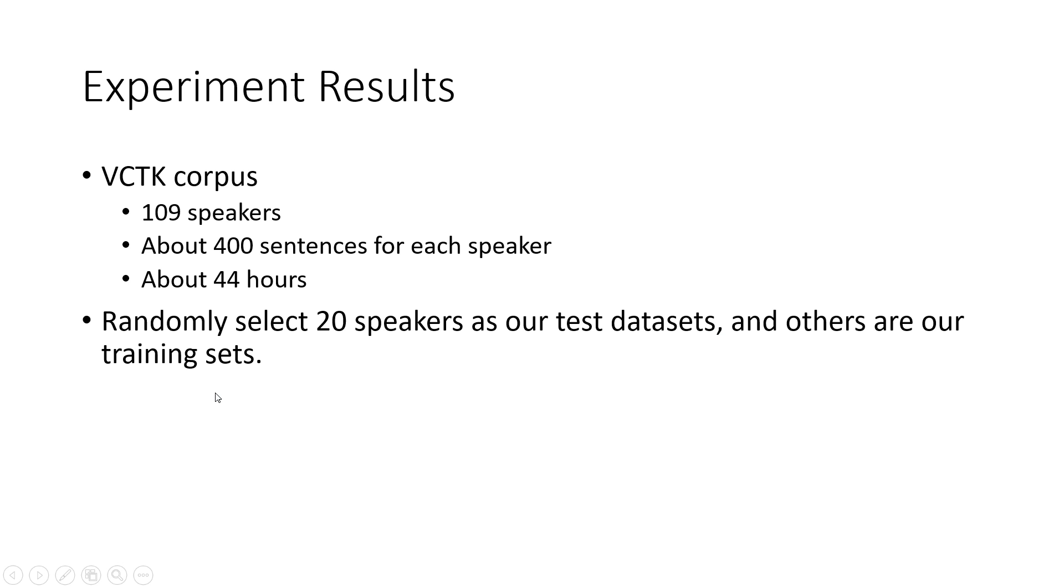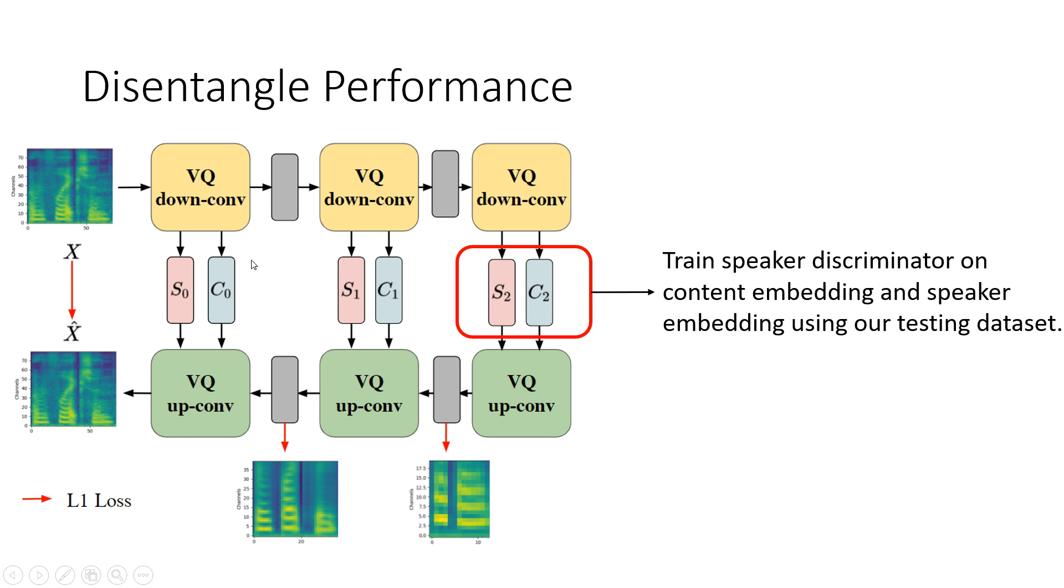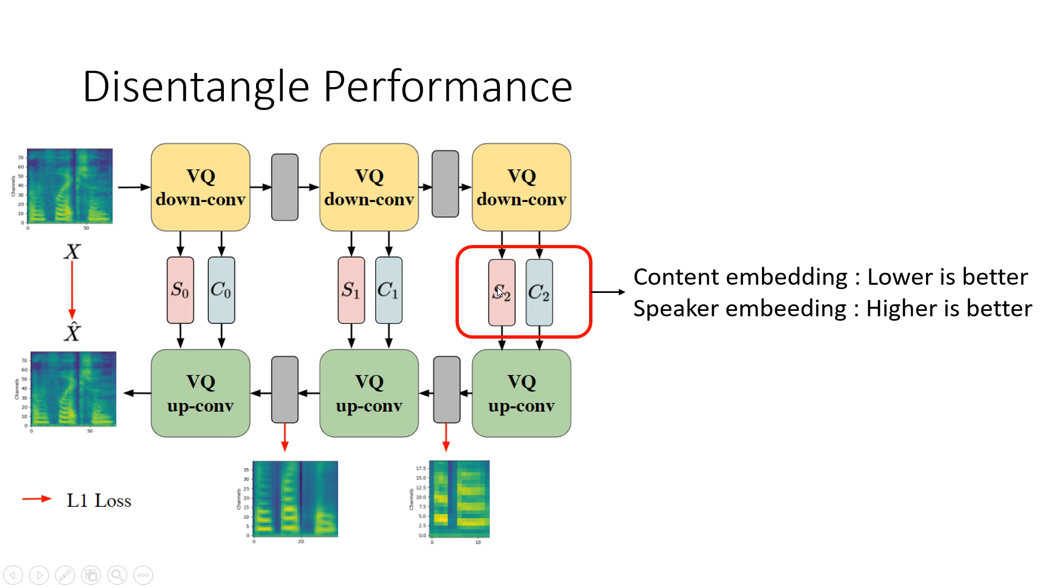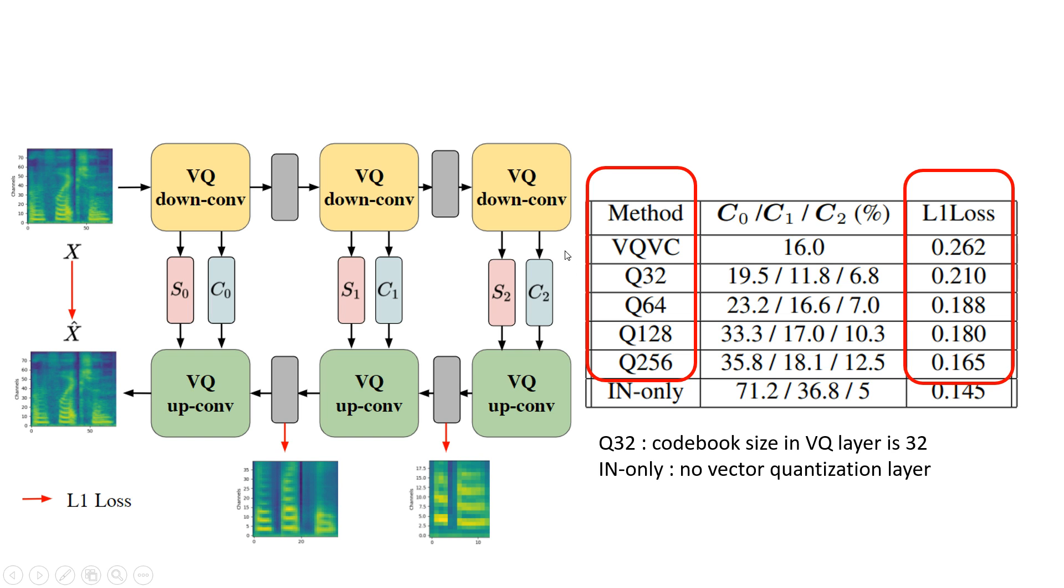The first experiment we want to show is the disentangle performance. We train a speaker discriminator on content embedding and speaker embedding using our test dataset which comprises 20 speakers. For content embedding, because we hope there is no speaker information in content embedding, the accuracy of speaker discriminator lower is better. On the other hand, the accuracy of speaker embedding higher is better. Here is our experiment result.